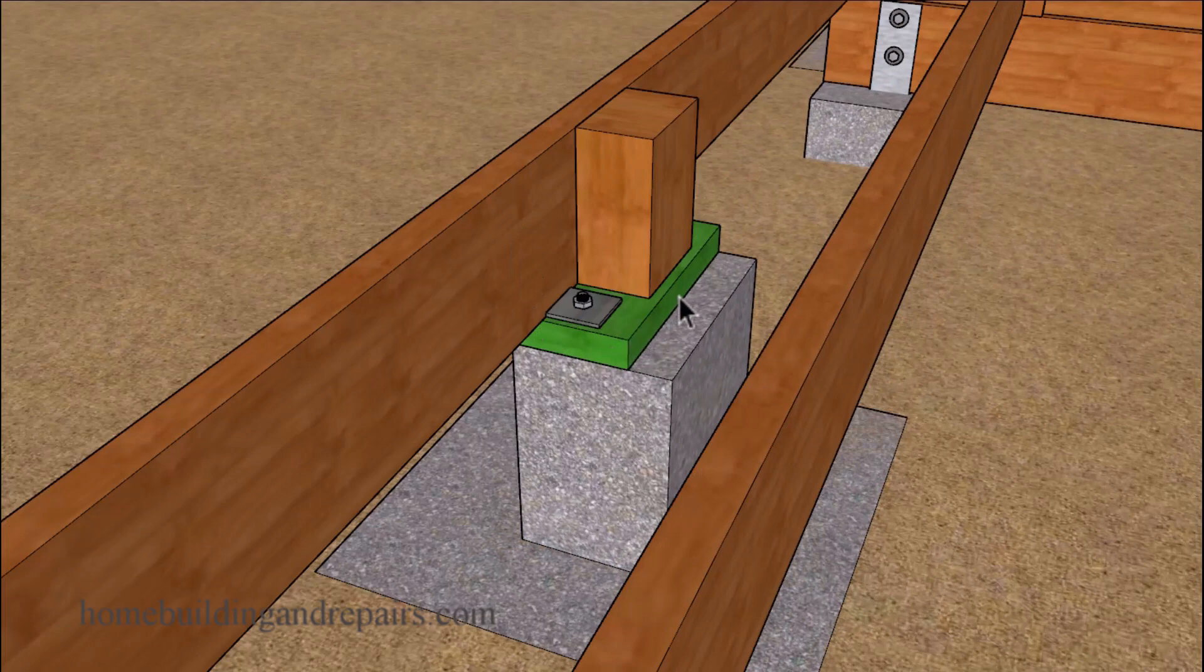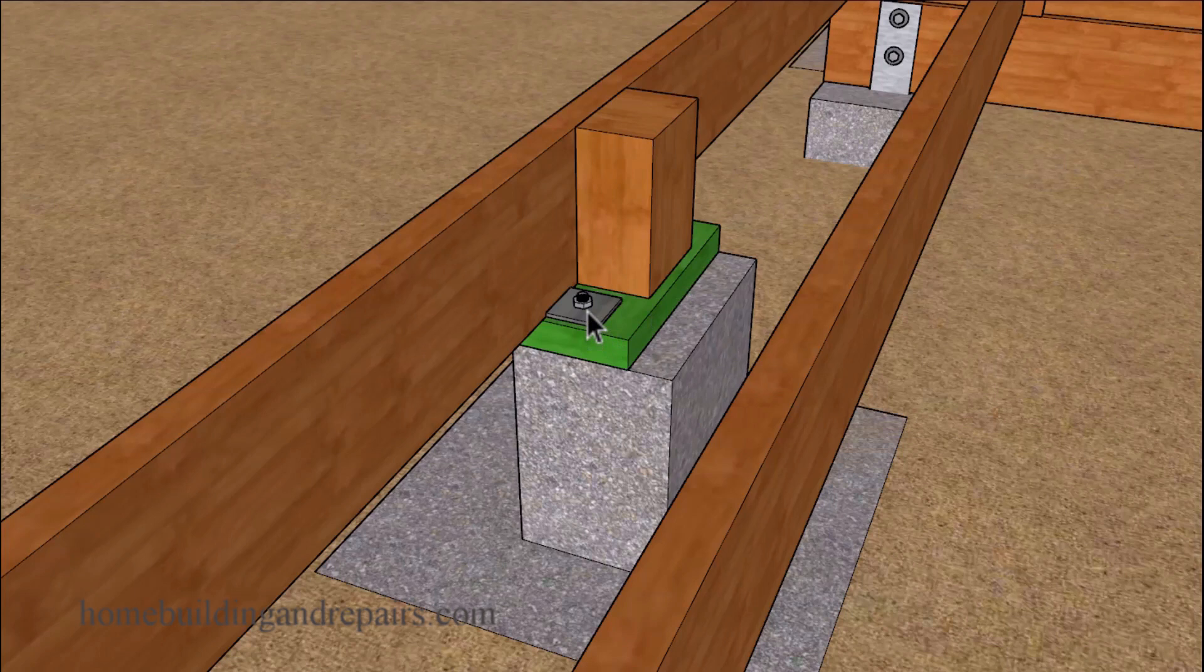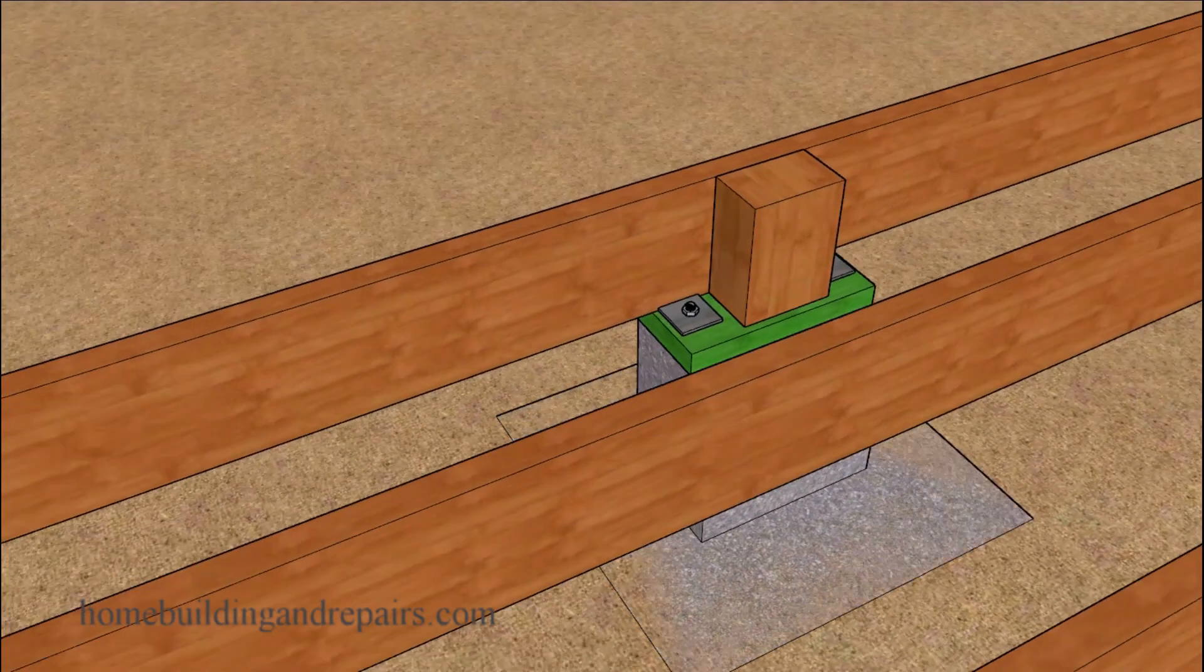I went ahead and put a two by six. You can put a two by eight piece of treated. I bolted it down to the footing and then put a four by six in here. You can fasten this with building hardware or simply nail it to the joist and nail it to the sill plate.